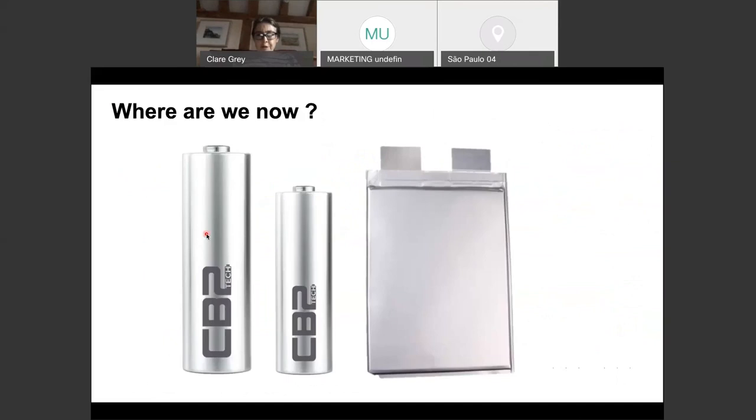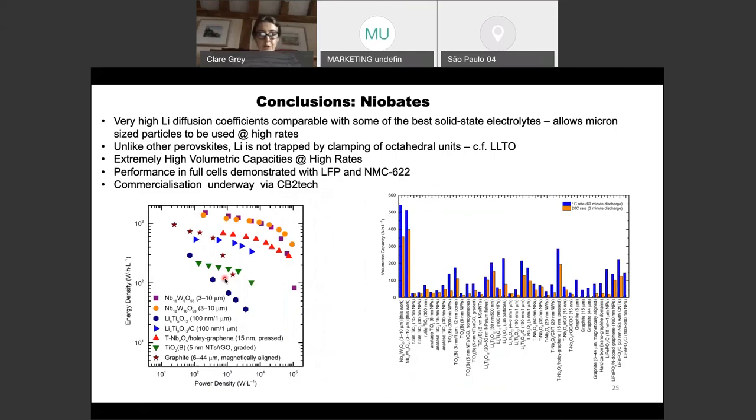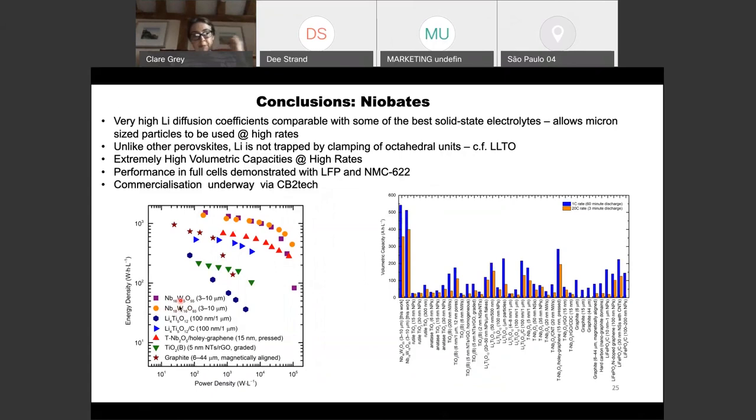Where are we now? We are trying to scale up some of these materials and commercialize them by a spin-out company, C4V Tech, and Sai Shivaredi, the CEO and co-founder, with myself and Kent, will talk about this in two days time. Just to conclude, I hope I've shown you that we were able to identify two very good materials in terms of rate performance and long-term stability: the Nb16W5 phase, which is the shear phase, and the Nb18W8, which is the bronze phase. Of course, these materials are heavy, but in terms of volumetric energy density, which is shown schematically here, we have very high performance. The results in full cell data are encouraging.